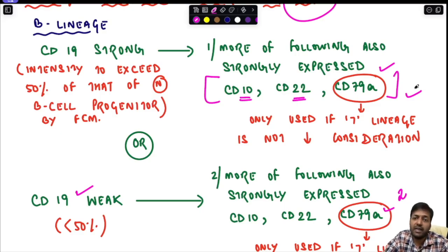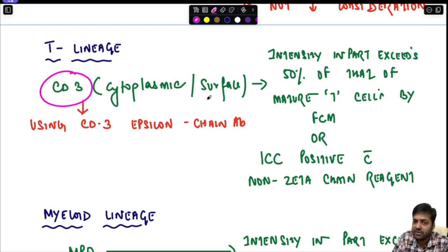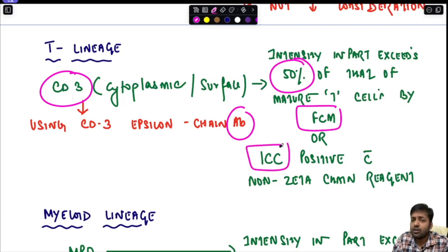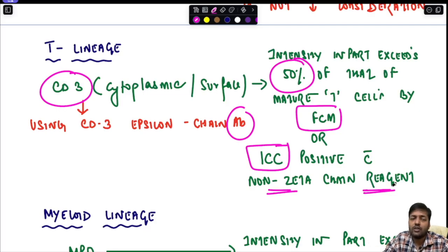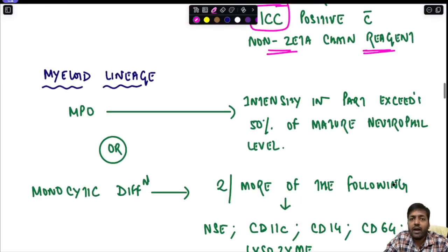For T lineage assignment, CD3 must be positive — either cytoplasmic or surface CD3 — detected using a CD3 epsilon chain antibody, with intensity exceeding 50% of that of mature T cells by flow cytometry. If flow cytometry is unavailable, immunocytochemistry is accepted, but a non-zeta chain antibody reagent must be used.